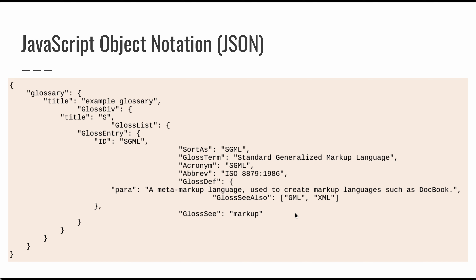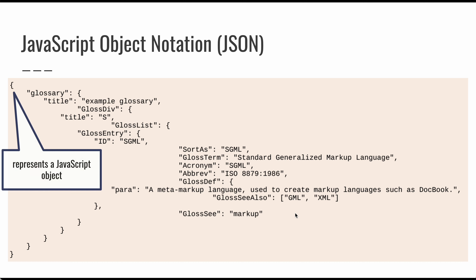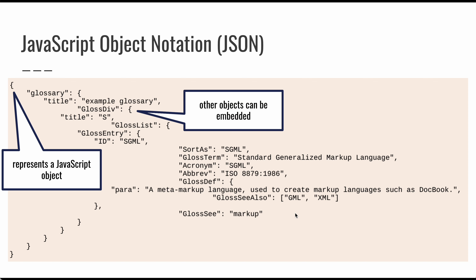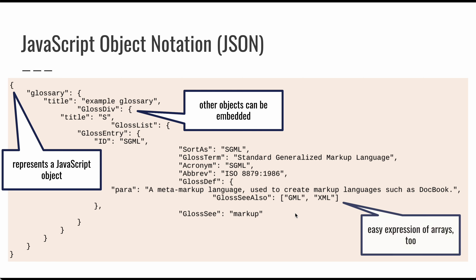We'll start off with JavaScript Object Notation. We've been using this loosely throughout the course when we define objects on the fly, but it turns out it's a pretty straightforward way to represent information. Using curly braces, we can represent a totally legal JavaScript object defined inline. We can embed objects into each other, give them properties, those properties can be objects or arrays — it's a nice format for our JavaScript code and also for representing information.